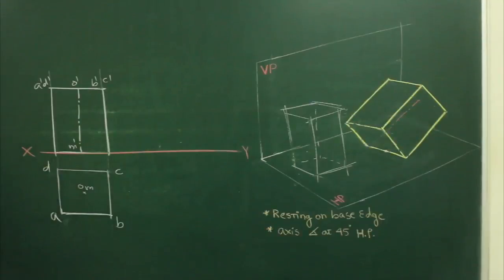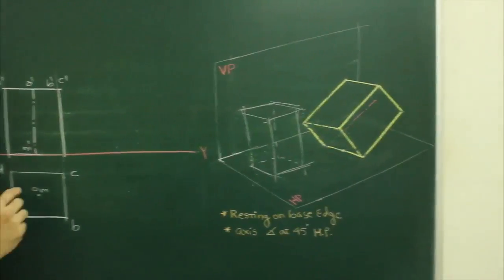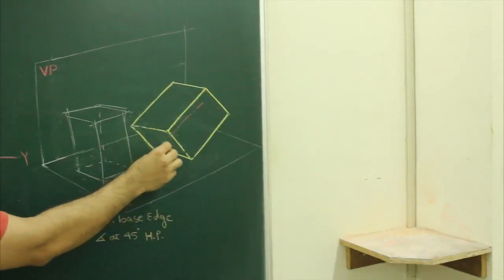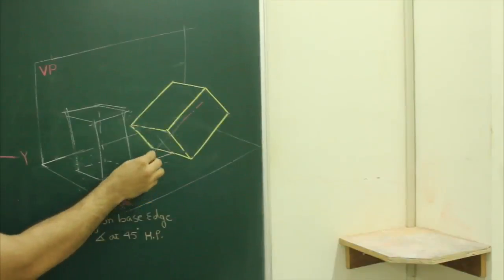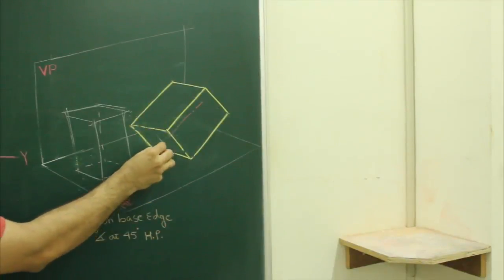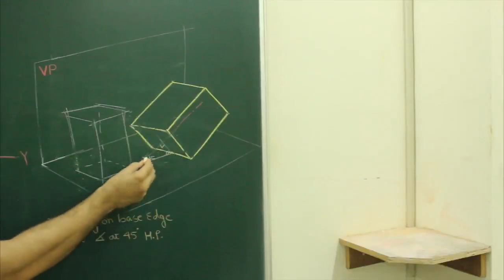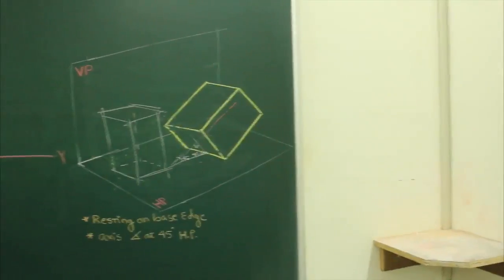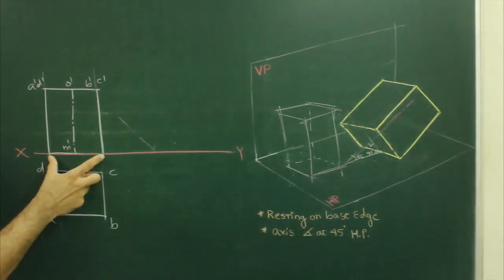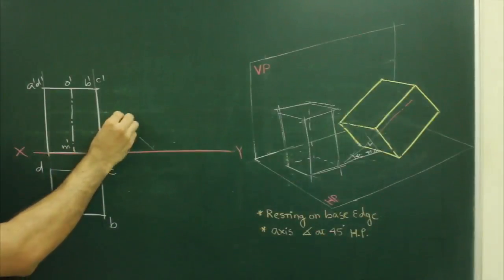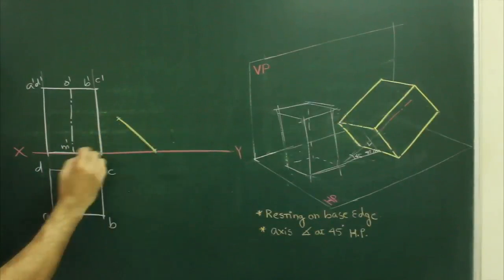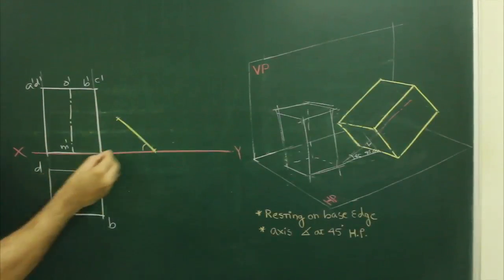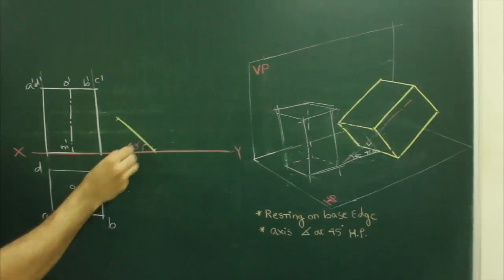Now for the third condition — axis inclined at 45 degrees to HP. If the axis is inclined at 45 degrees and the axis is perpendicular to the base, then the base would also be inclined at 45 degrees. So we take 45 degrees from here, take this distance, and cut off this side. So we get this base inclined at 45 degrees.